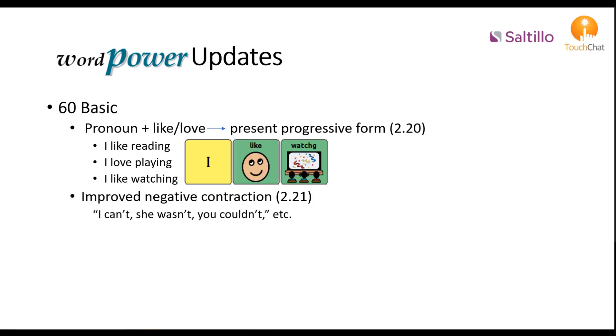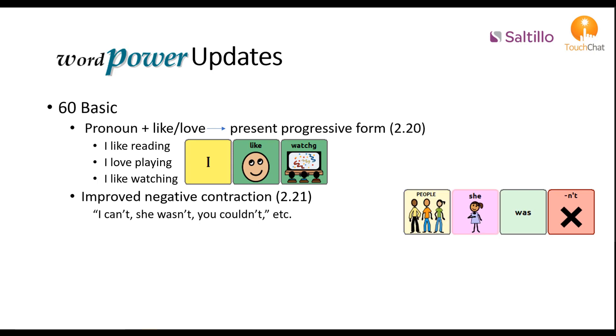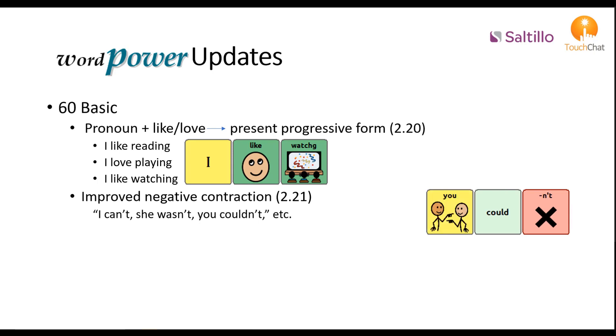In 2.21 the negative contraction ability was improved, allowing the sequencing of I can't, she wasn't, you couldn't, etc.